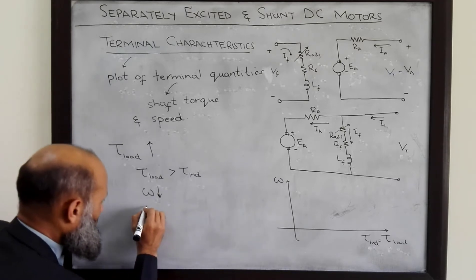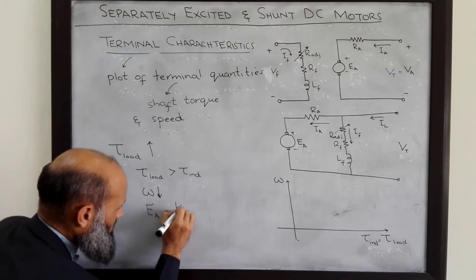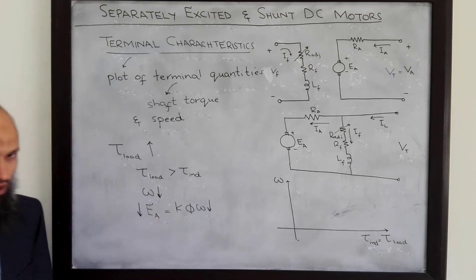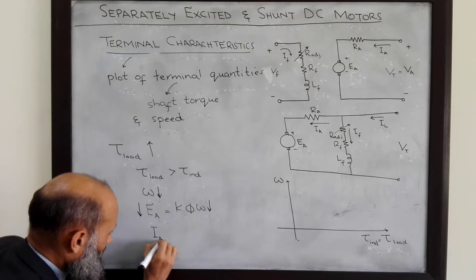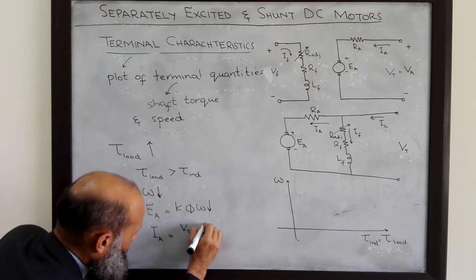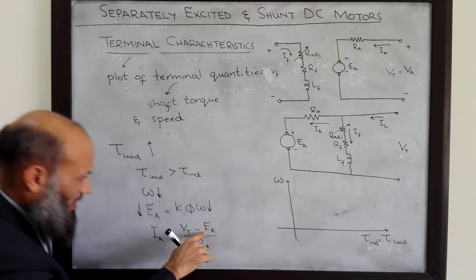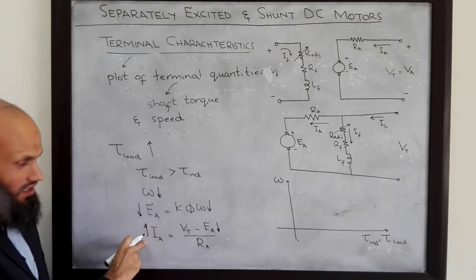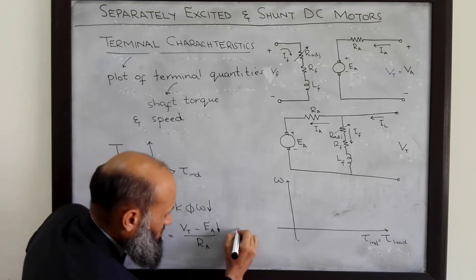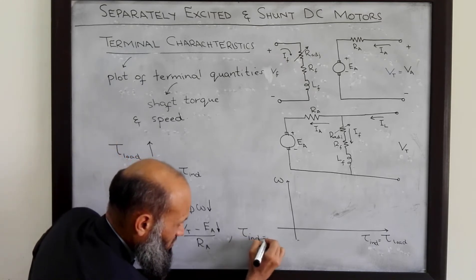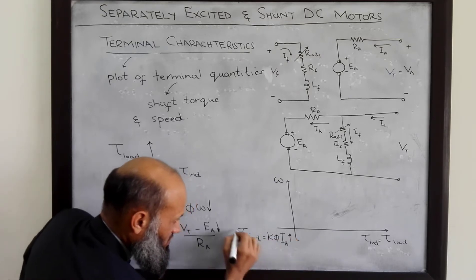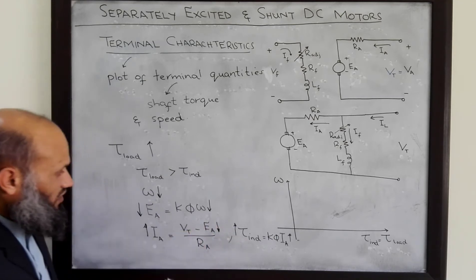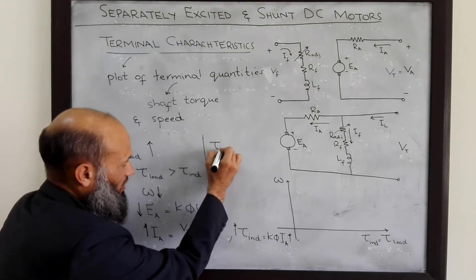As speed decreases, the generated back EMF Ea decreases, since Ea = Kφω. As Ea decreases, the armature current Ia increases, because Ia equals terminal voltage minus back EMF divided by armature resistance — so this difference increases and Ia increases. The increase in Ia in turn results in an increase in induced torque, since induced torque equals Kφ·Ia. After this transient, the induced torque increases to become equal to the load torque at steady state.